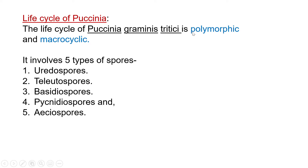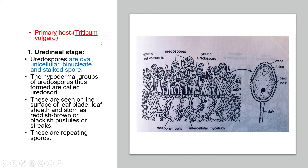The life cycle of Puccinia is also known as polymorphic and microcyclic because it involves five different types of spores, making it extremely complicated. These five spores are: uredospores, teliospores, basidiospores, pycnidiospores, and aecidiospores. The cycle continues from the wheat plant to the barberry bush and back to the wheat plant.